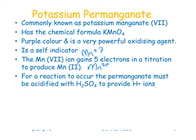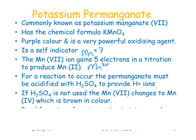We use sulfuric acid because if we used hydrochloric acid, the chloride ions present may be oxidized to chlorine gas by the potassium permanganate. If the permanganate isn't acidified, you get a reduction from Mn⁺⁷ to Mn⁺⁴, which gives a brown color — an intermediate oxidation state that you want to avoid.